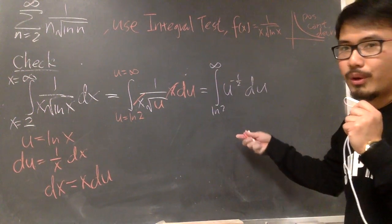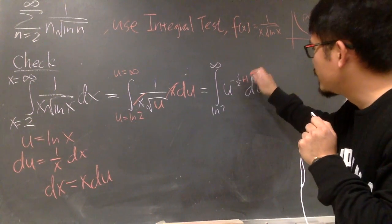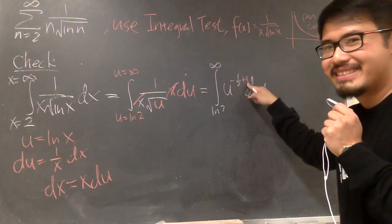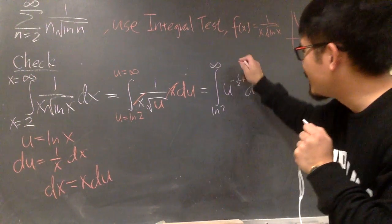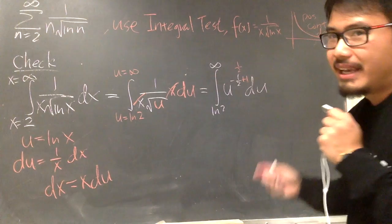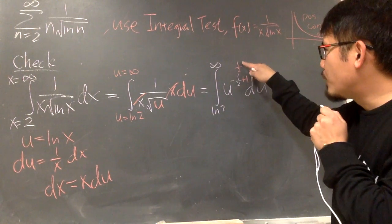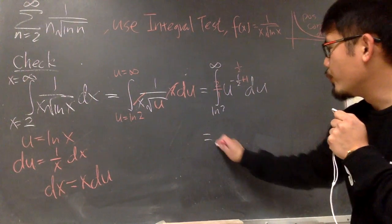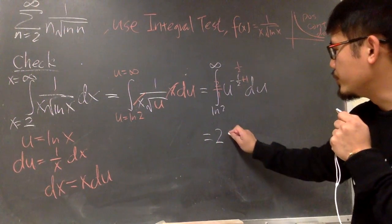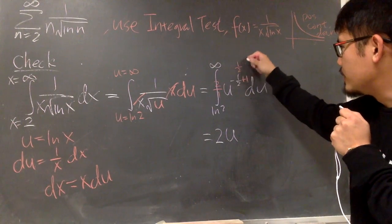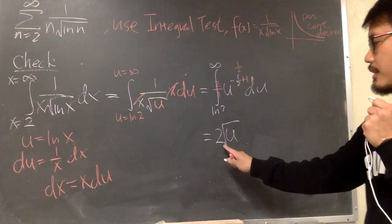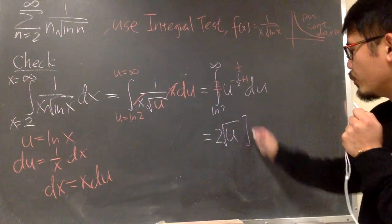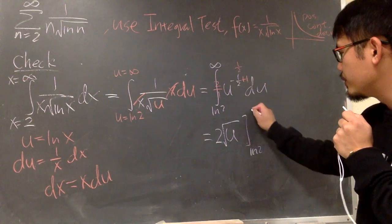How can we do this integral? Well, this is now power rule backwards. We add 1 to it. Negative 1/2 plus 1 is positive 1/2, right? And then we have to divide it by this new power. Dividing by 1/2 is the same as saying multiply by 2 over 1. So now we have 2u, and this is the 1/2 power. So it's a square root pretty much. 2 times square root of u. And I'm just going to work out everything in the u world. You go from ln 2 to infinity.